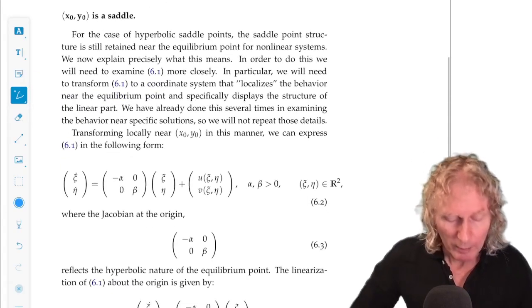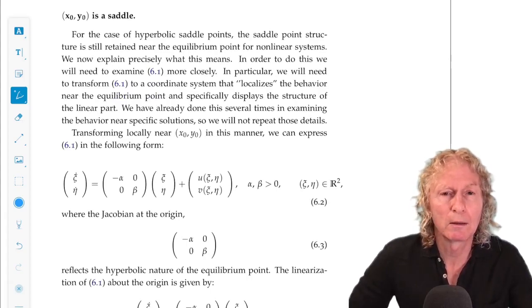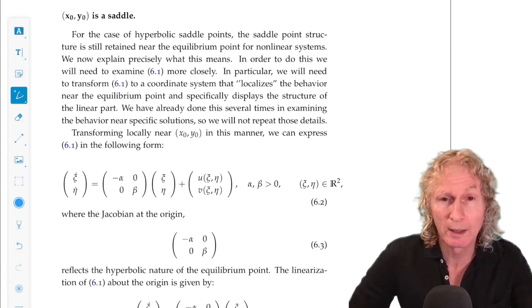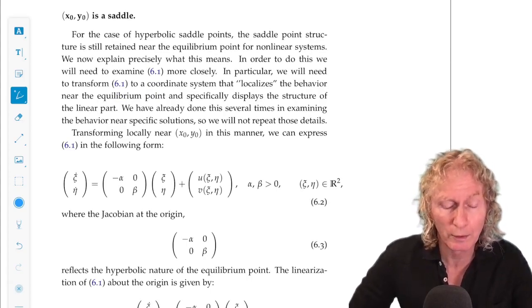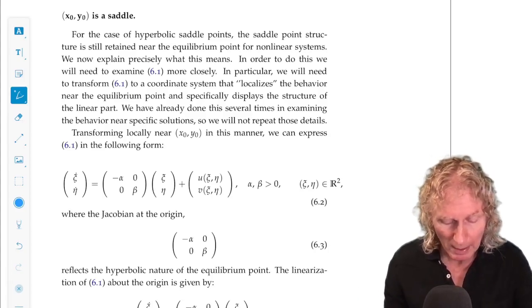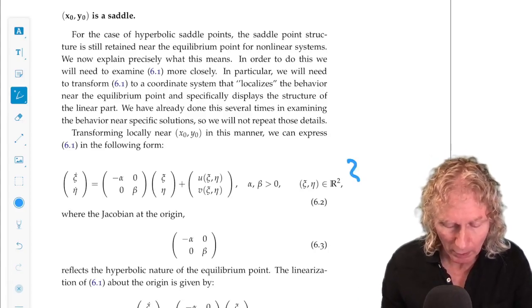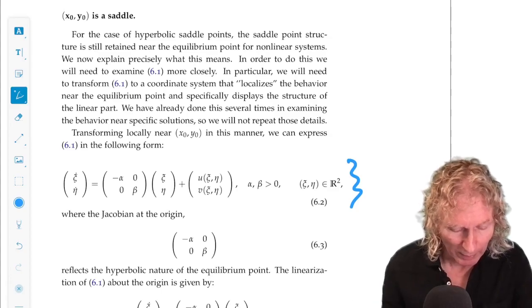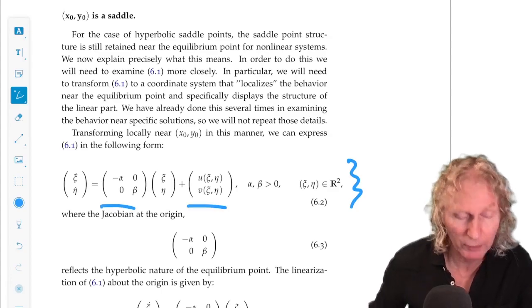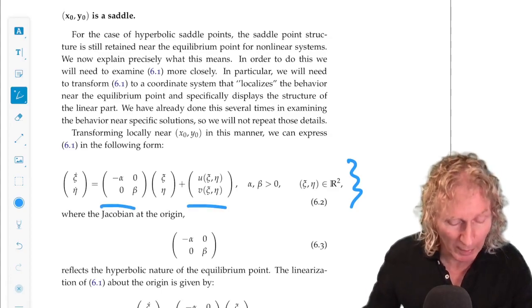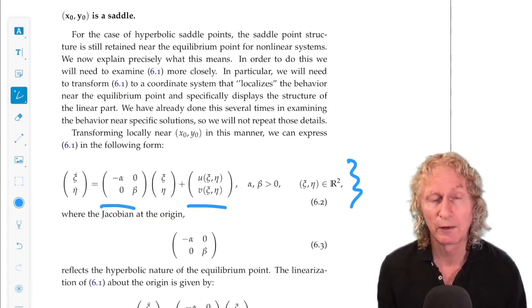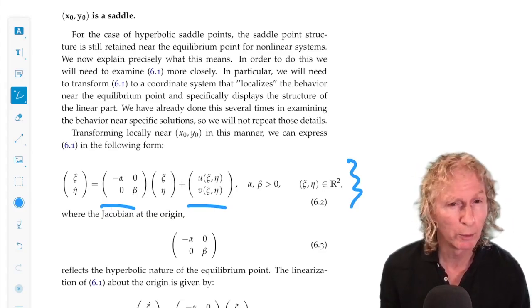So, remember, we can take an equilibrium point, and we can Taylor expand the vector field about that equilibrium point, and that's what we've done here. So, we have the linear and the nonlinear parts. Now, we've changed the coordinates from X, Y to ξ, η. Why did we do that?